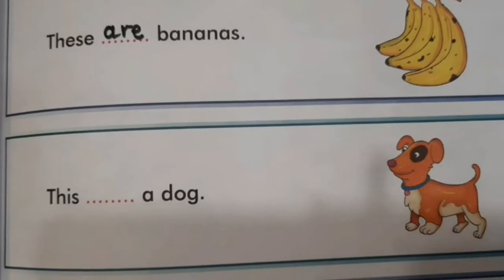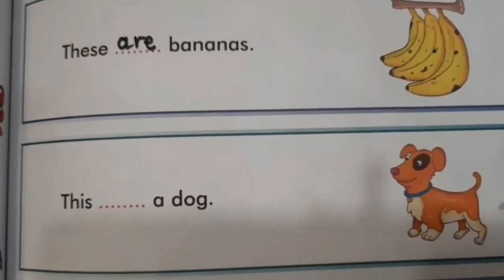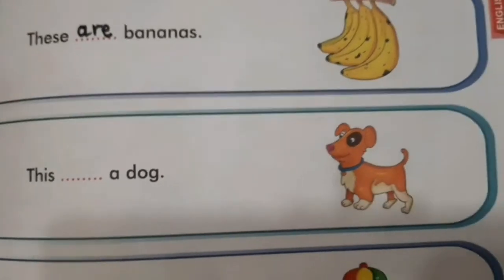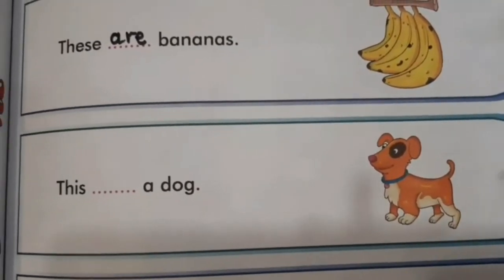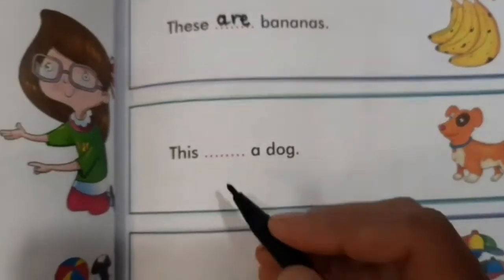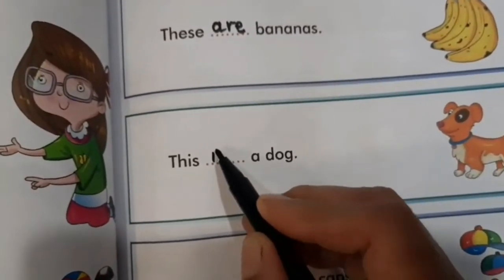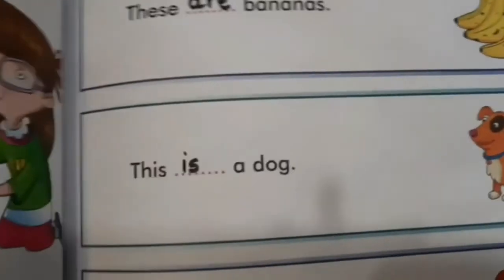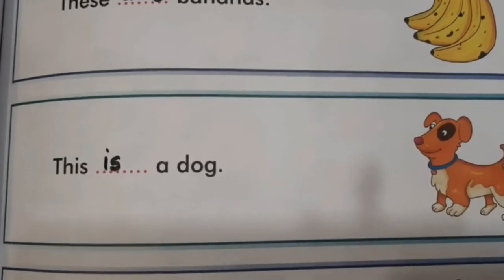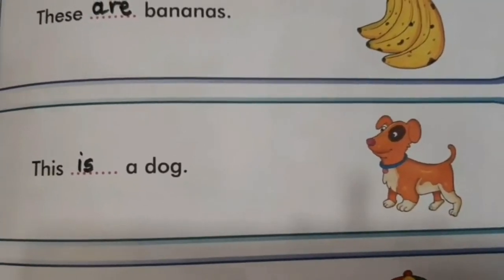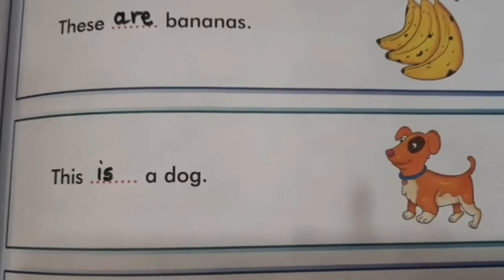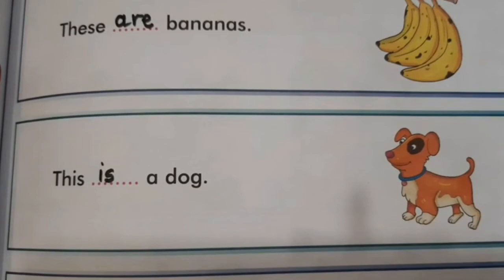Next sentence dekhte hain. Yeh kis ka picture hai? Yeh toh dog ka picture hai. Aur kitne dogs hain? Only one. Kitne dogs hain? Sirf ek dog hai. Toh yehaan peh sentence hai: 'This ___ a dog.' Toh yehaan peh space mein hum likhenge 'is'. This is a dog. 'Is' is liye likha hai kyunki ek hi dog hai. Agar ek se zyada dogs hote toh 'these are dogs', par ek hi dog hai is liye 'is' likha hai.